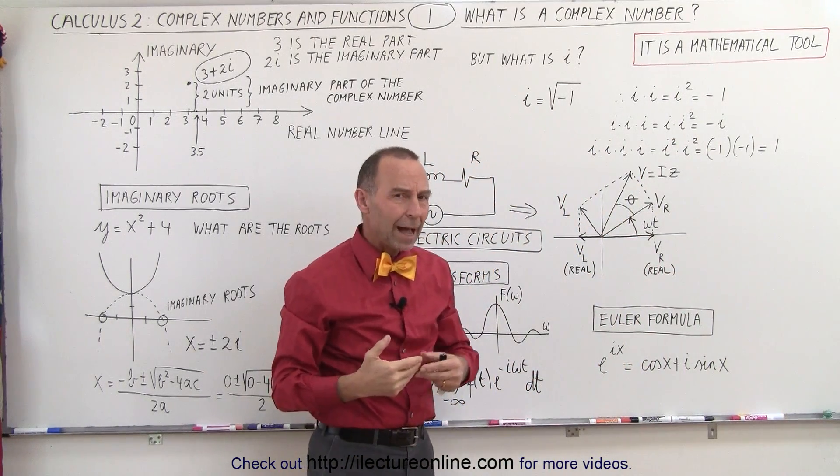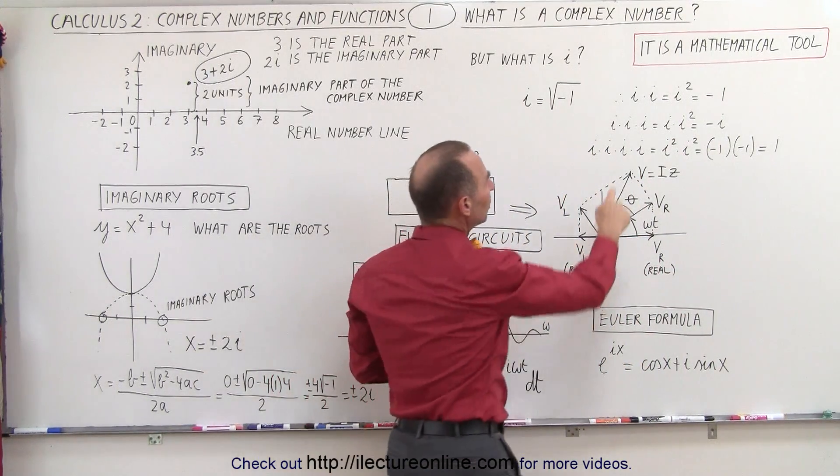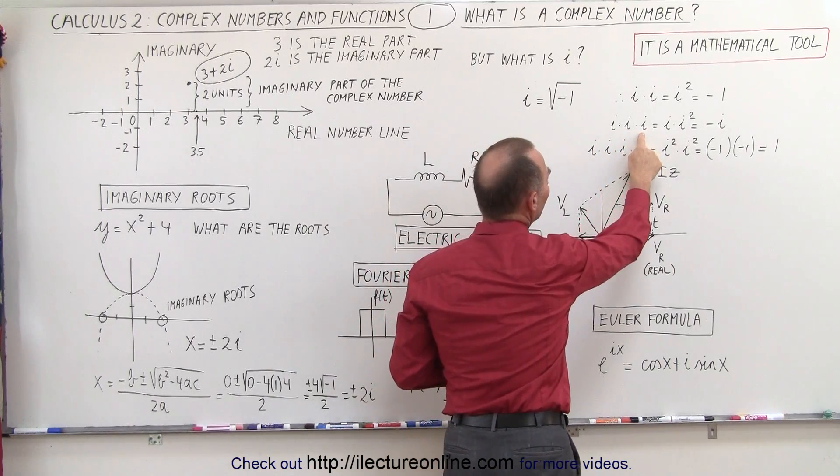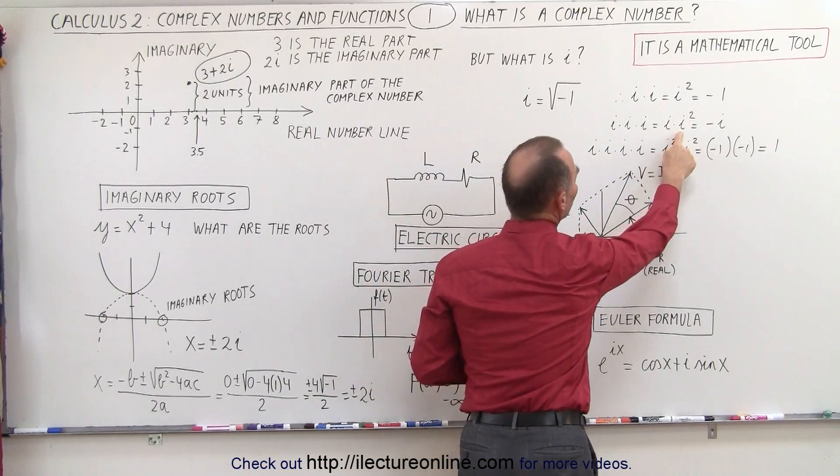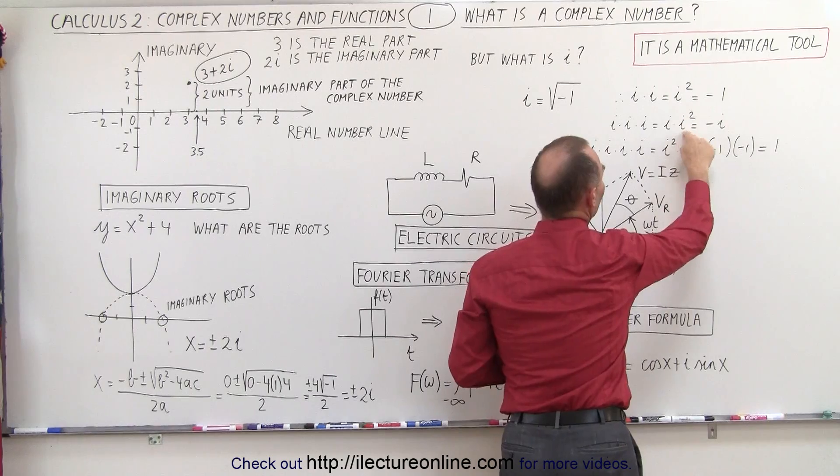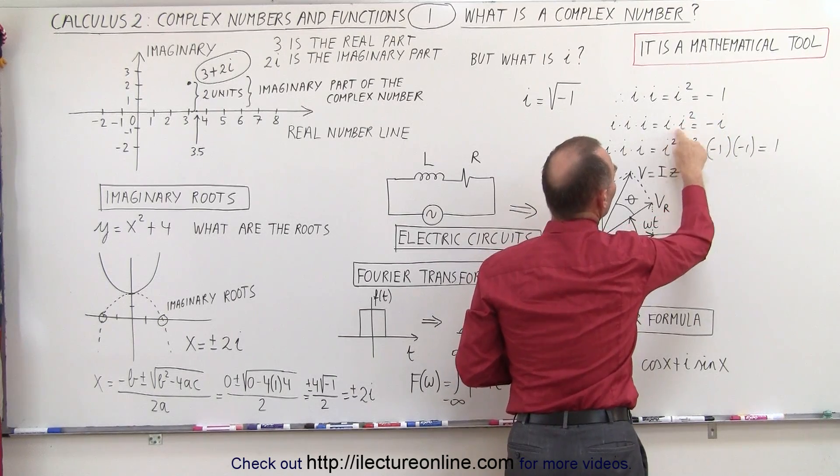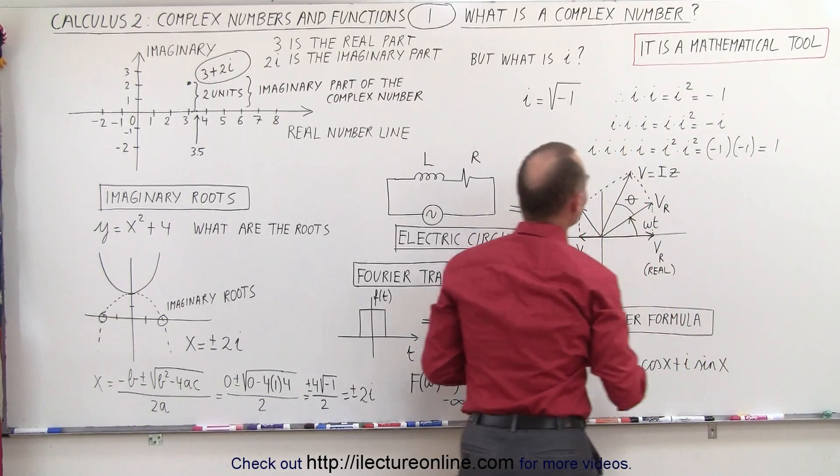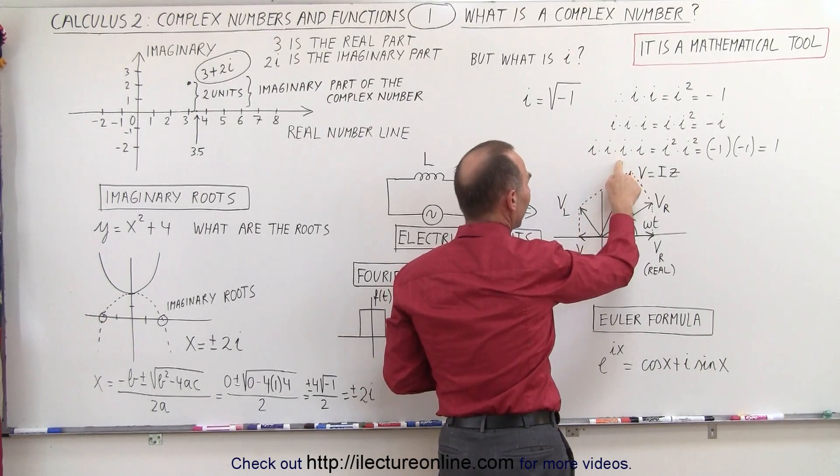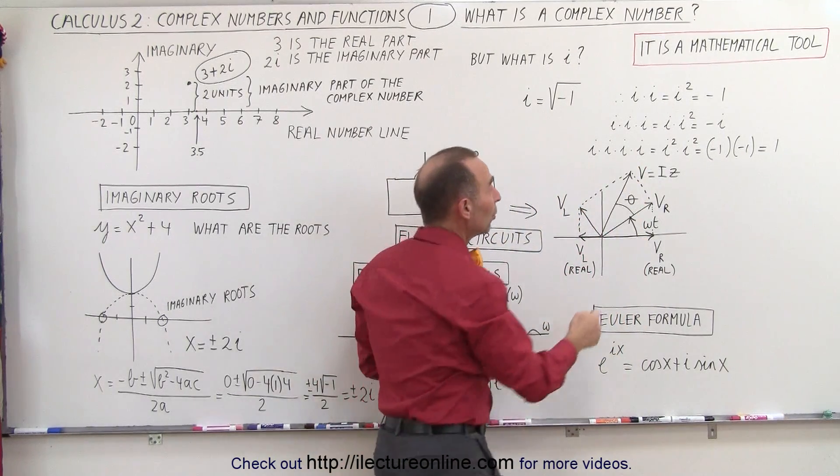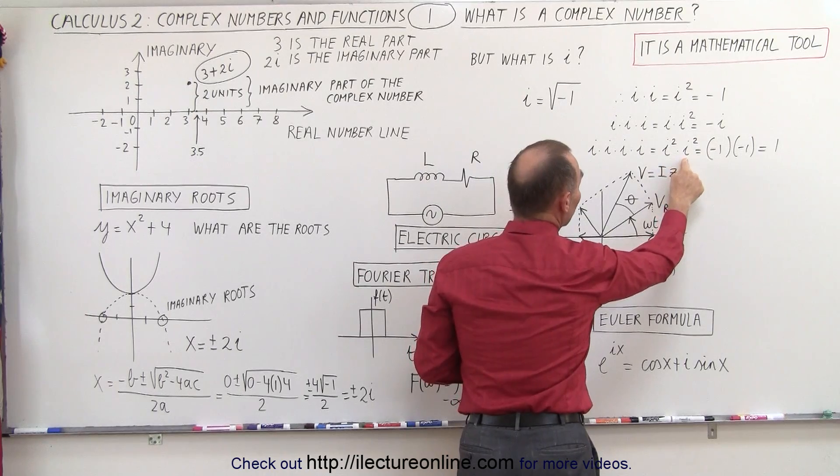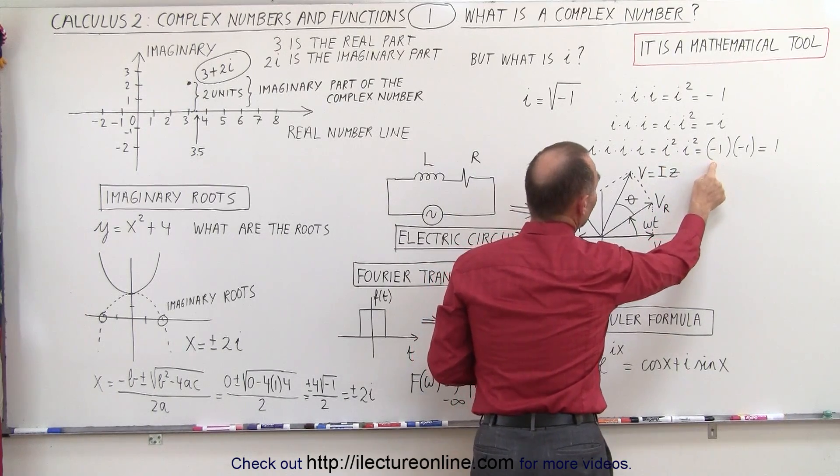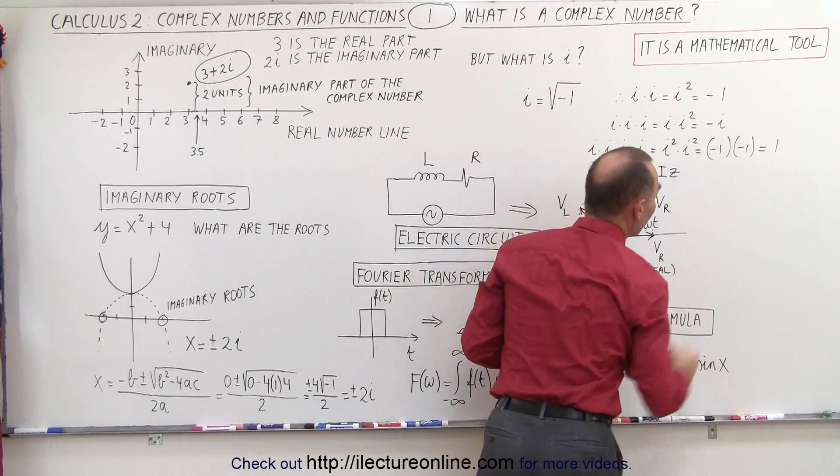What happens if we get i cubed? Well, i cubed is i times i times i, which means it's i times i squared, and i squared is defined as negative 1, so this becomes negative i. And then if we multiply i times i times i times i, which is really i to the fourth power, which is i squared times i squared, which means negative 1 times negative 1, we get a positive 1.